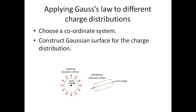After deciding the coordinate system, we have to construct a closed Gaussian surface around the charge distribution. For a point charge, a spherical Gaussian surface is constructed. Similarly, for a line charge, a closed cylindrical Gaussian surface is constructed.